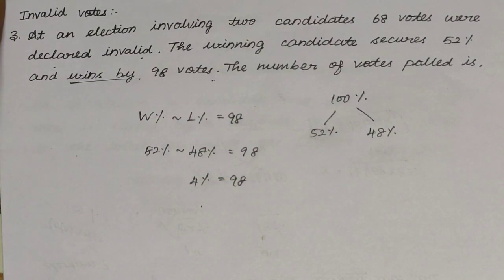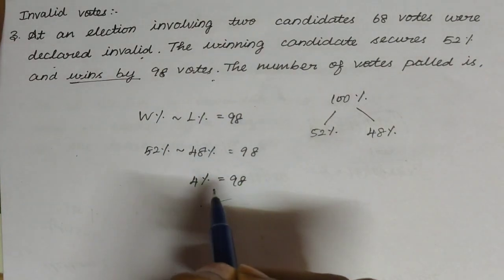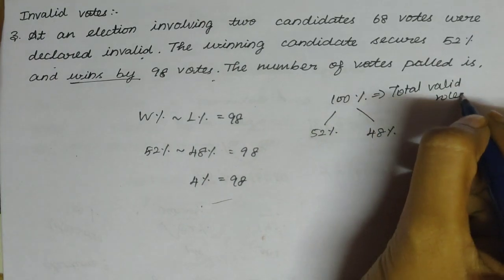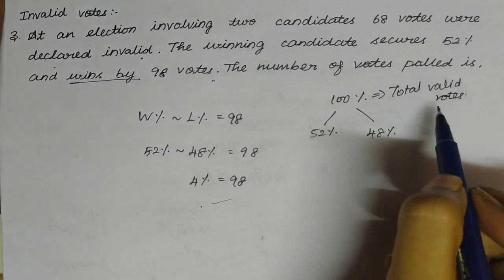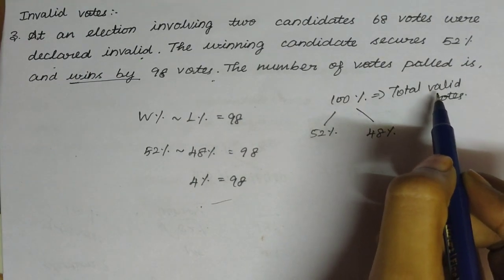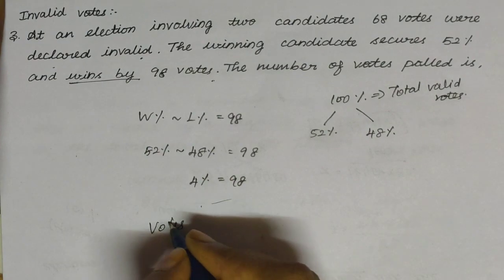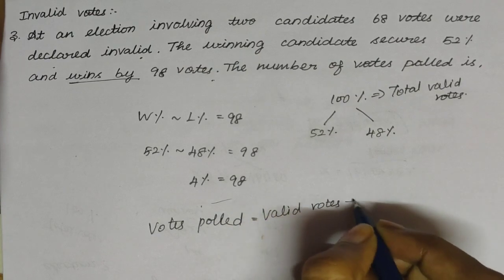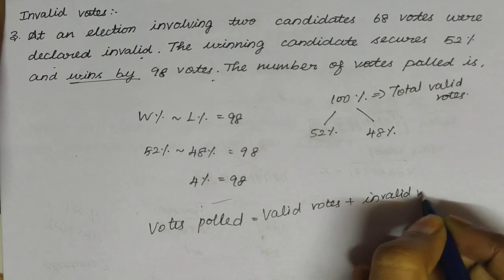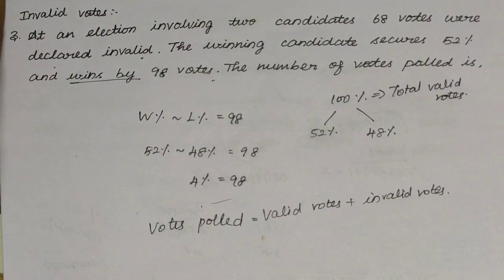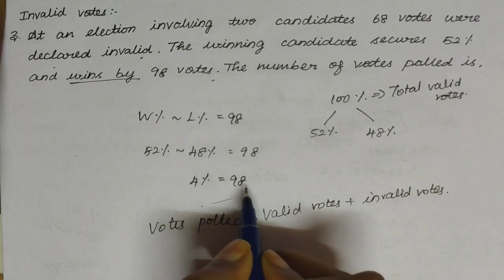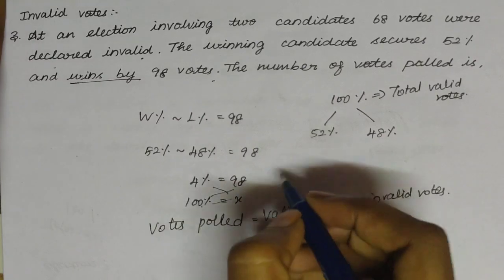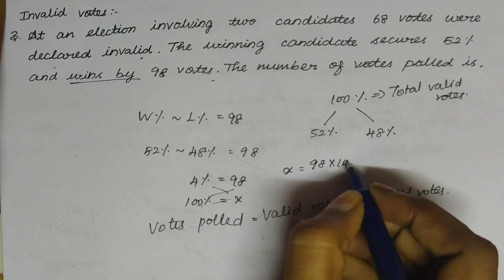Now we need to find 100%. Here, 100% refers to the number of valid votes, because invalid votes are not included in percentage calculations. So 100% equals total valid votes. Votes polled equals valid votes plus invalid votes. We are given 68 invalid votes. So 100% is equal to x. Simplify: x is equal to 98 into 100 divided by 4.